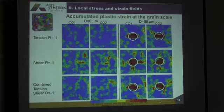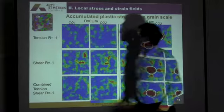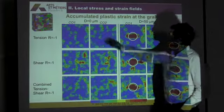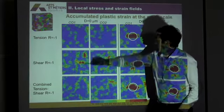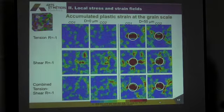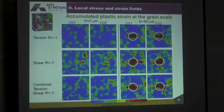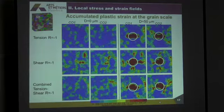I start with an illustration of what we can obtain — for instance here with a 3D model. We have tension, shear, and combined tension-shear. And to show that the crystal orientation has a strong effect on the way the stress and strain fields are distributed, we look at two different crystal orientation sets.